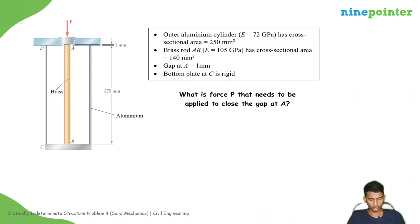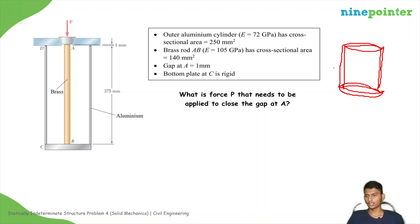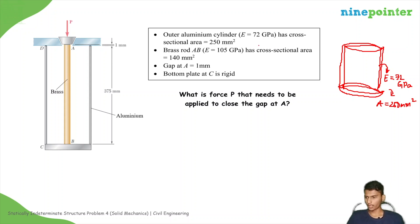So this is the problem. We have an aluminum cylinder surrounded by a brass rod. The outer aluminum cylinder has E equal to 72 GPa and cross-sectional area A equal to 250 mm squared. The brass rod has E equal to 105 GPa and cross-sectional area of 140 mm squared.